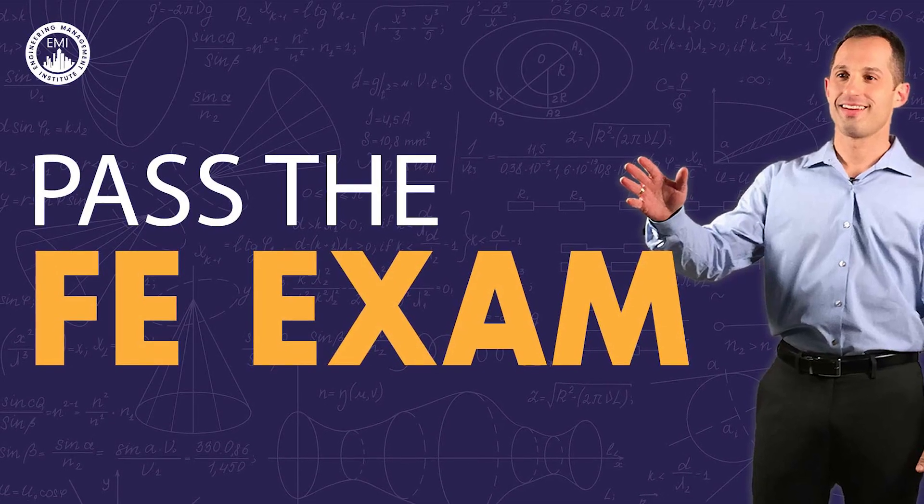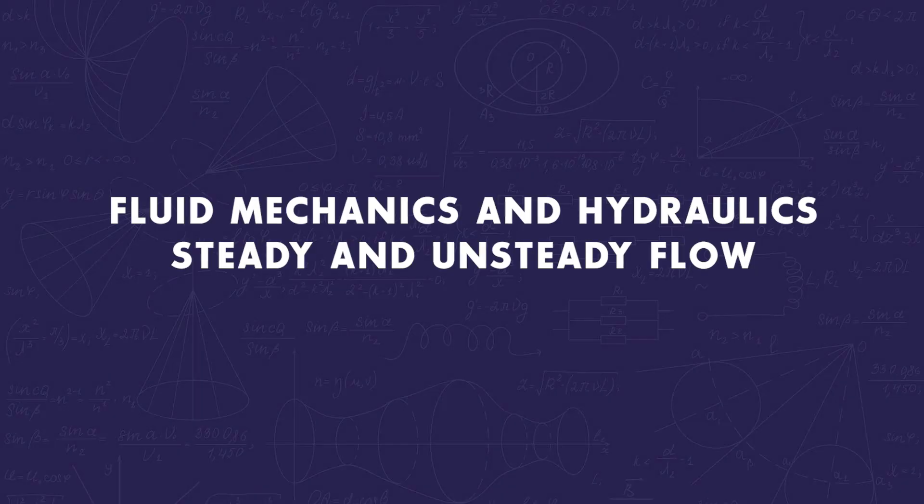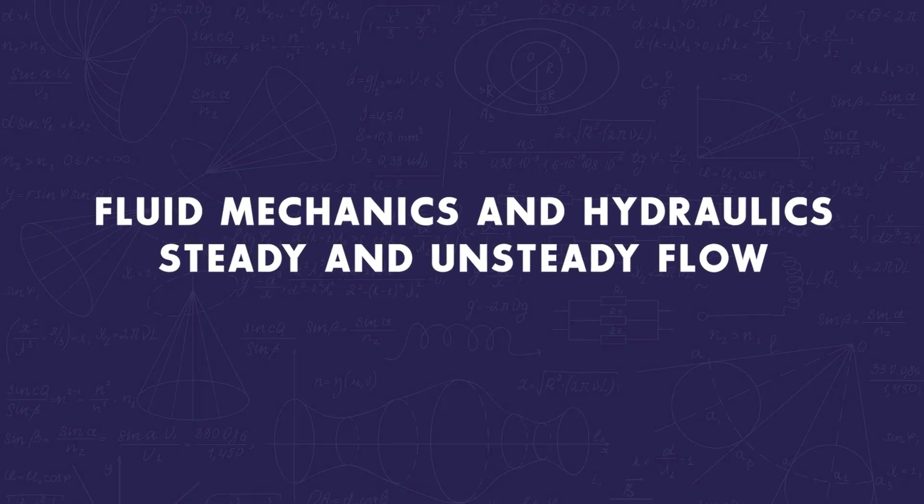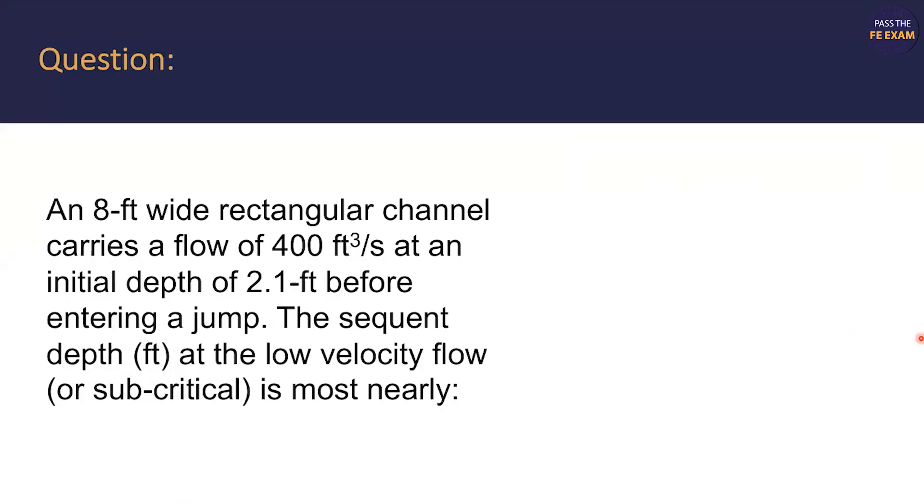All right, let's jump right into it. An eight-foot-wide rectangular channel carries a flow of 400 cubic feet per second at an initial depth of 2.1 feet before entering a jump. The sequent depth in feet at the low-velocity flow or subcritical is most nearly...